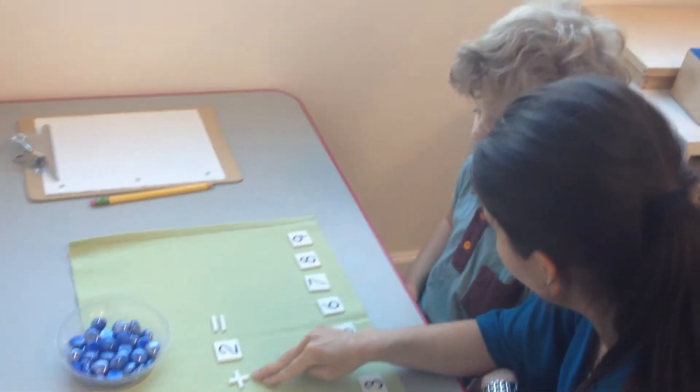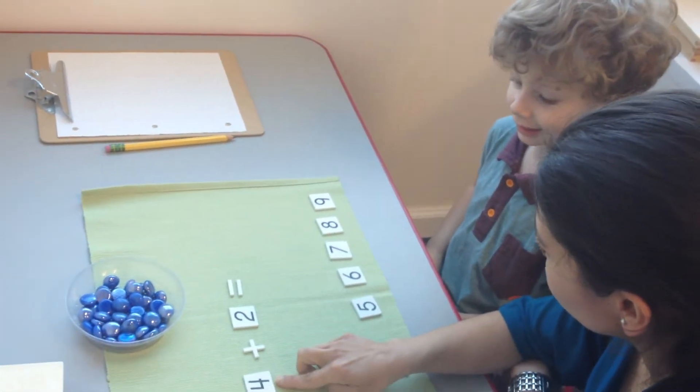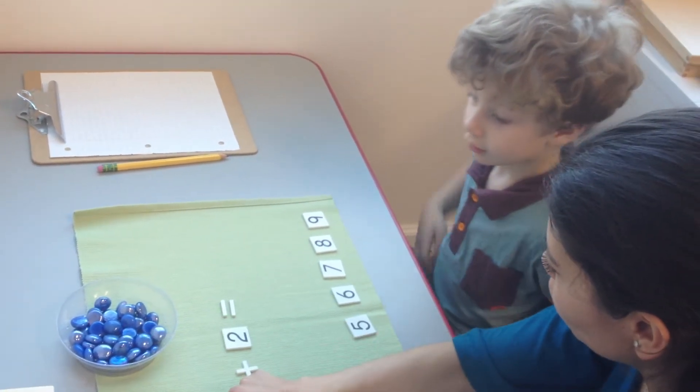4. So we have to take out the first number. What does it tell you to do? This one. 4. Can you count out 4 beads?